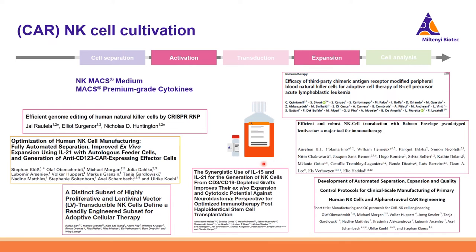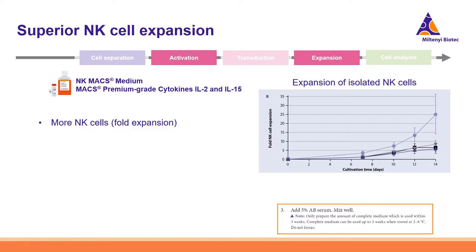When using the NK MACS Medium, you need to add 5% AB serum, but no feeder cells are required. Comparing NK MACS Medium to the T cell expansion medium TexMACS and competitor mediums, you can see that starting from day 7, NK cells expand nicely and there is superior NK cell expansion with this medium. When starting from PBMCs and culturing with NK MACS Medium, there is a preferential expansion of NK cells compared to NKT and T cells, which grow disproportionately in other media.